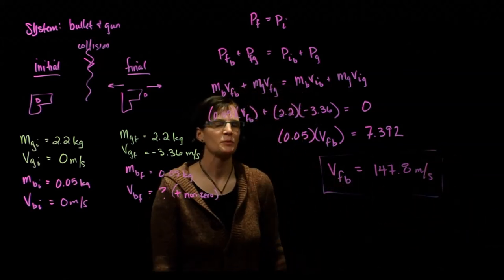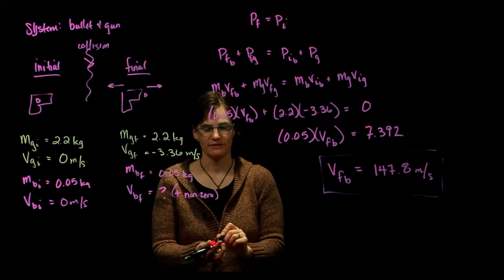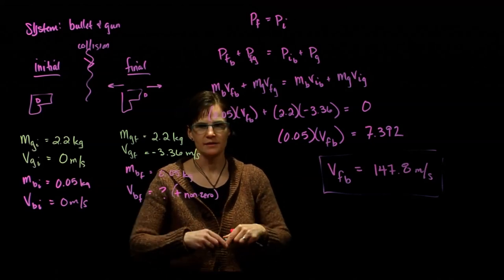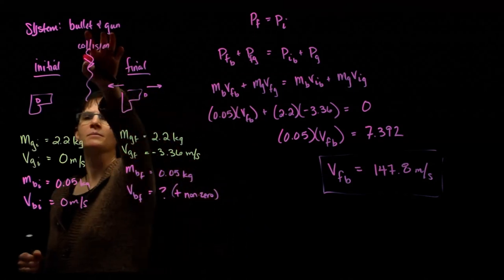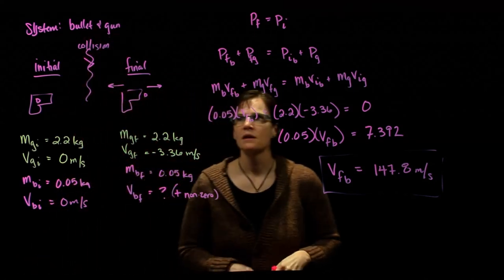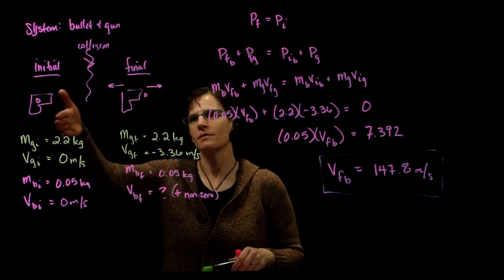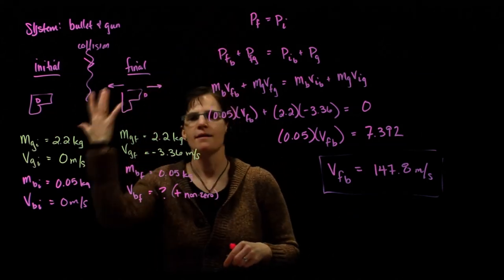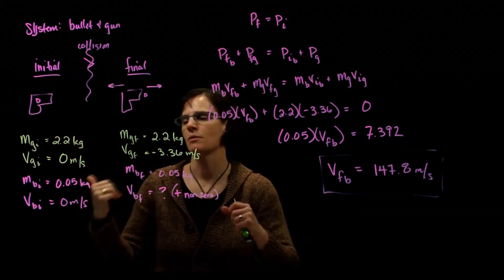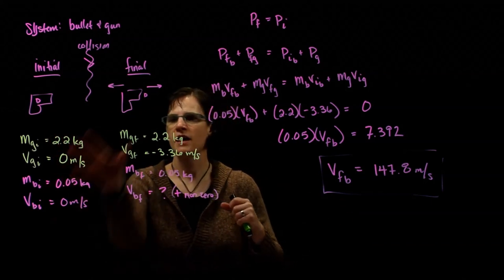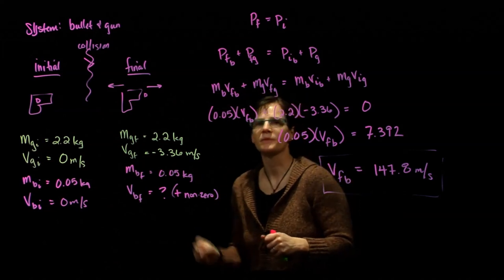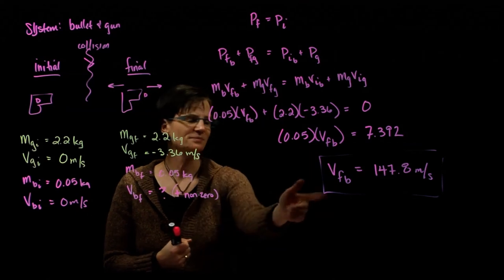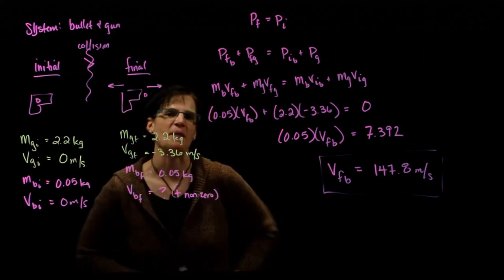Pretty slick and pretty fast — much quicker than doing the force analysis. This is a very powerful idea: the law of conservation. As a reminder: identify the system and what objects are in it, examine the collision — what happens right before, what happens right after — set final momentum equal to initial momentum, define momentum for the individual objects within the system, and use that relationship to find the answer. Good job!